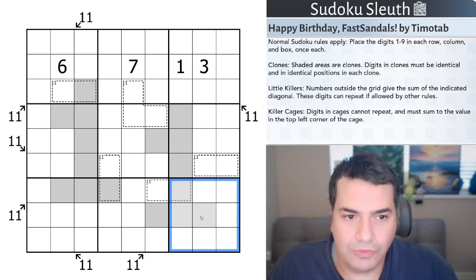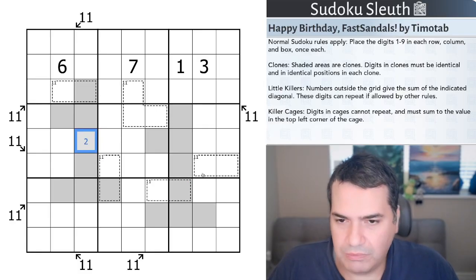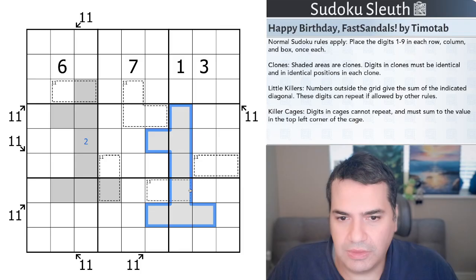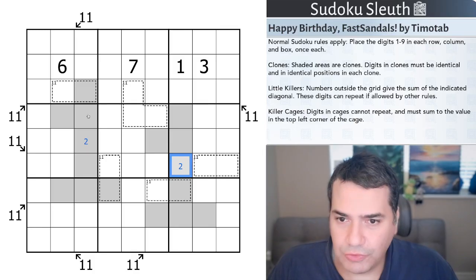Then we have clones. So shaded areas are clones. Digits in clones must be identical and in identical positions in each clone. So the way I'm interpreting this is, if you take this cell here and make it a 2, where it is inside this shaded area, it has to be in the same location inside this shaded area. So this cell would be a 2. And that would be true for all the shaded cells, obviously, not just the ones that I've just picked.